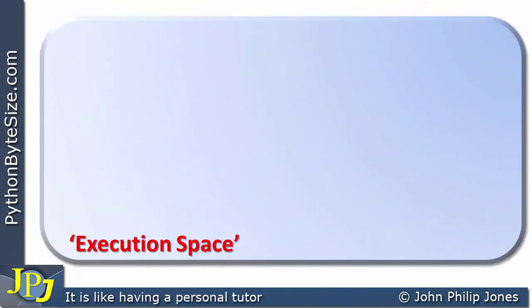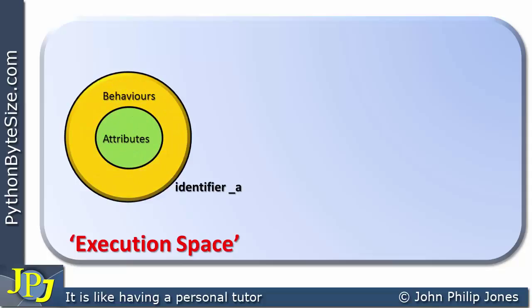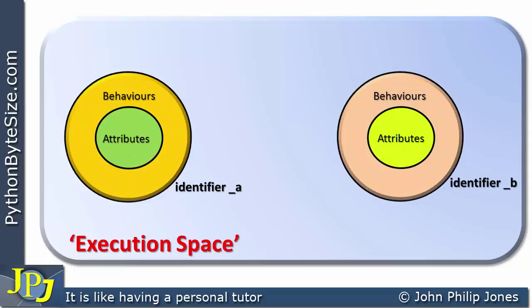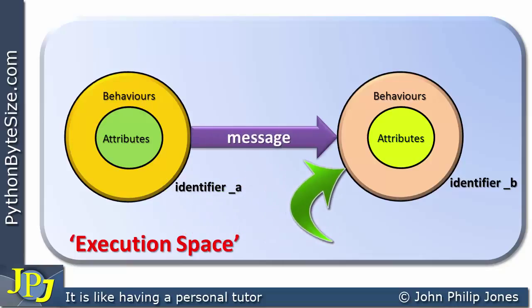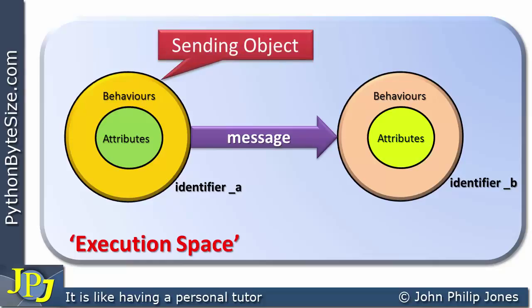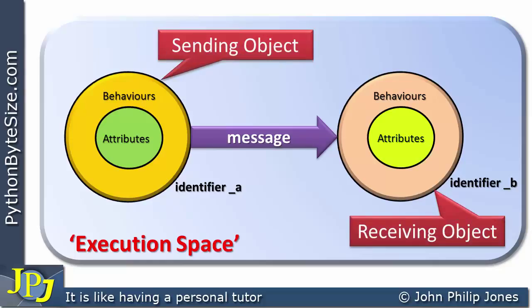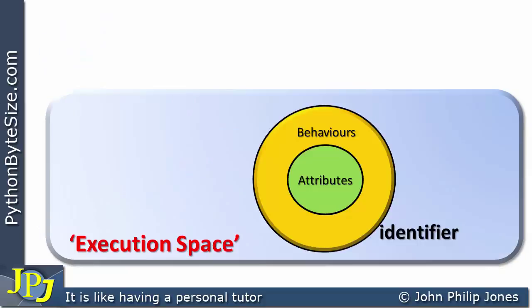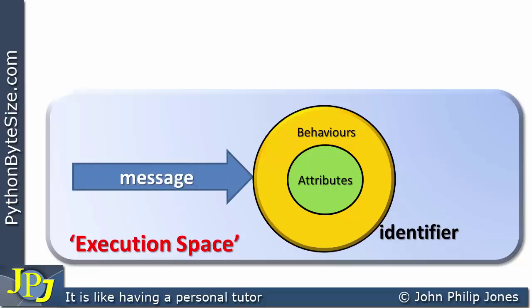In the previous video we left off by looking at the execution space and the objects that appeared in it. Both of these objects would have been derived from an appropriate class. We showed that one object sent a message to another, where we regarded one as the sending object and the other as the receiving object. If we now concentrate on the receiving object, we know it will be sent a message from some other object in the execution space.